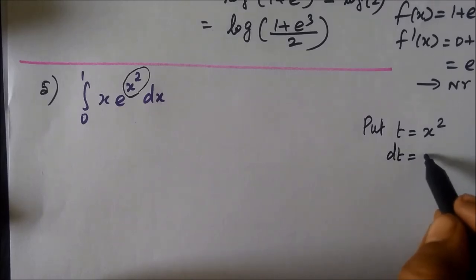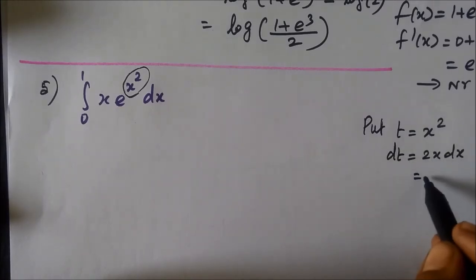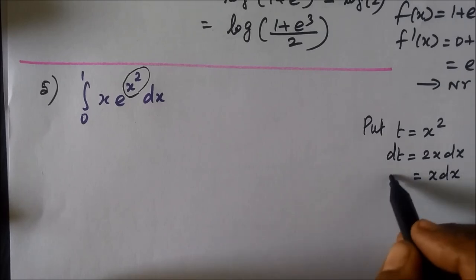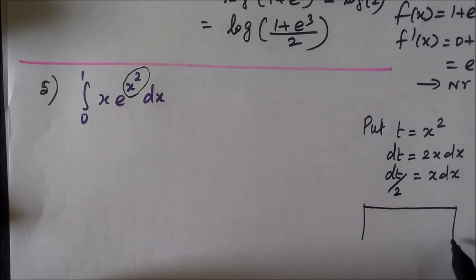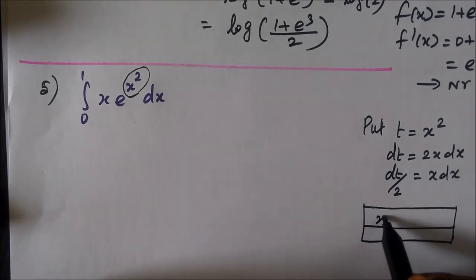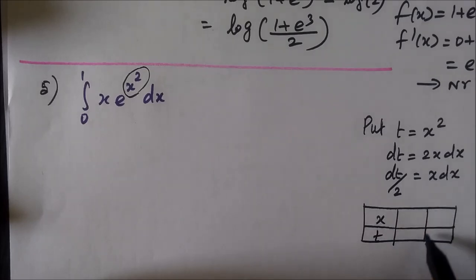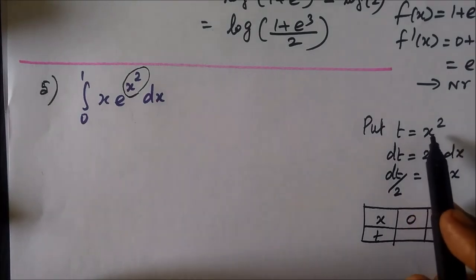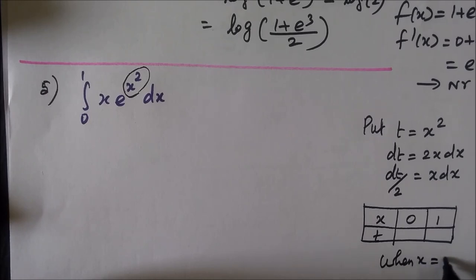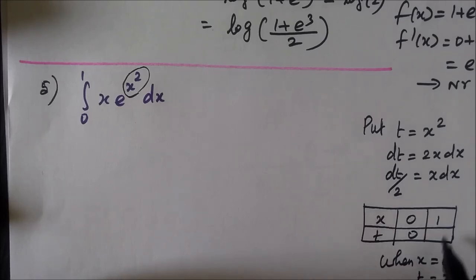Differentiating, dt equals 2x dx, so x dx equals dt/2. Now let's change the limits. The limit in terms of x is 0 to 1. When x equals 0, t equals 0² equals 0. When x equals 1, t equals 1² equals 1. So the limit remains 0 to 1.